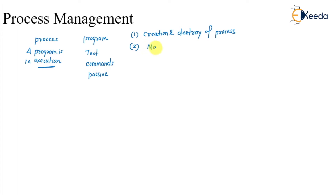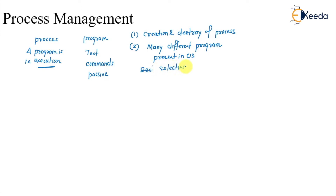There can be many different processes or programs present in the operating system. Selecting one of the processes for execution is another responsibility of the operating system, and that is done by the different schedulers that are present.